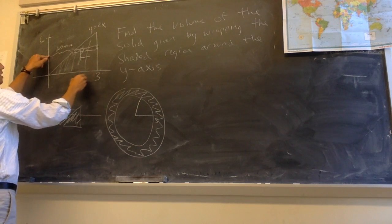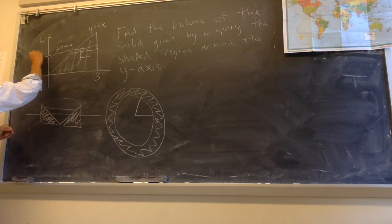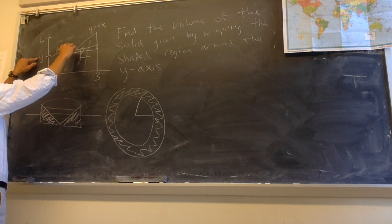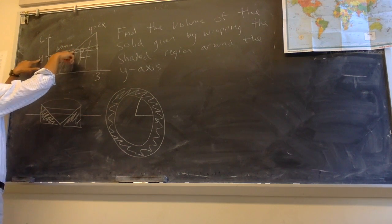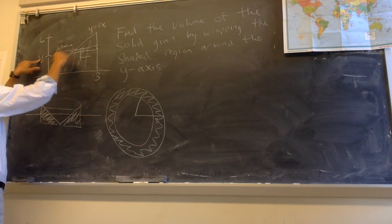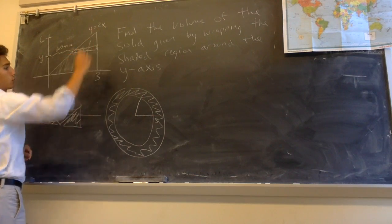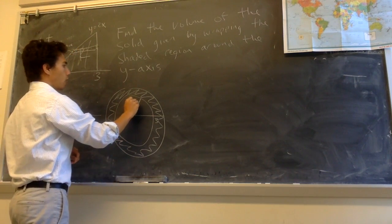So if I fix a y-value, so this is y, I can compute what this distance is because this is the x-coordinate, and it's on the line y equals 2x. So the x-coordinate is given by x equals y over 2.